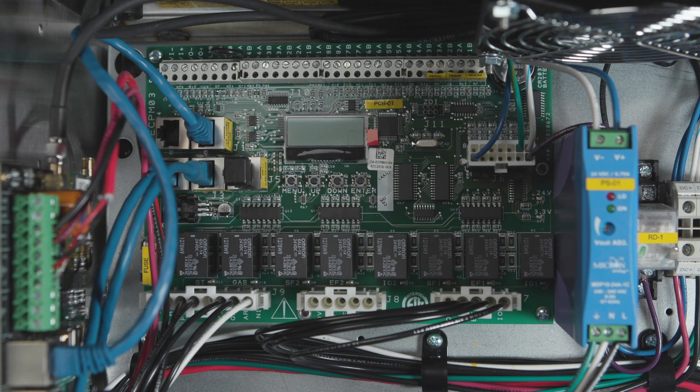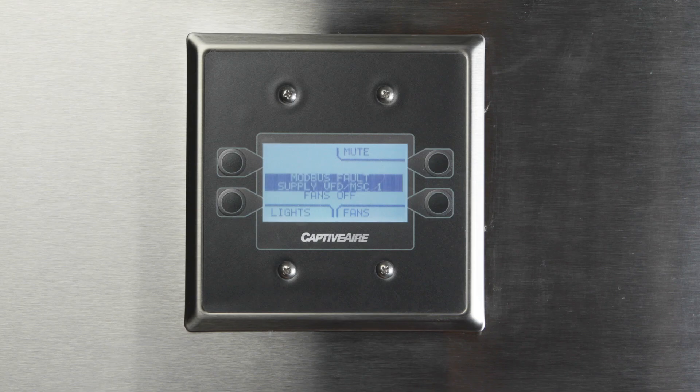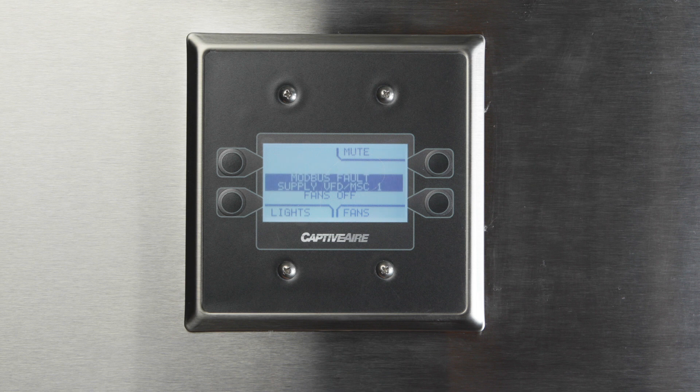First, if you power up the circuit board, but do not power up the VFDs, the HMI will show you a Modbus communication fault. That simply means that the circuit board can't see the VFD because it's not powered up and able to communicate.